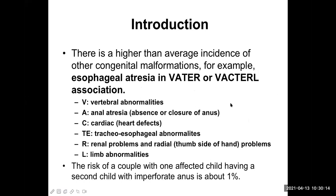How to diagnose esophageal atresia? By passing a red rubber catheter into the esophagus — it is a blind tube. The catheter will not go distally because that area is not developed; it is an atretic part, so the catheter will coil up and come back. This is how esophageal atresia is diagnosed.